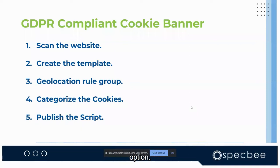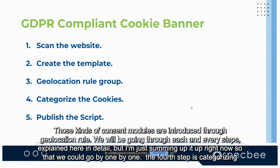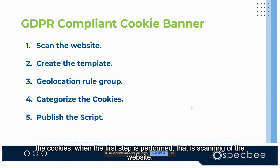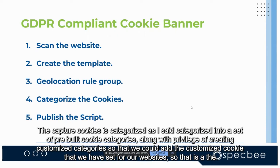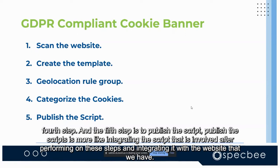The third step introduces opt-in or opt-out options through geolocation rules. The fourth step is categorizing the cookies — the captured cookies are categorized into pre-built cookie categories along with the privilege of creating customized categories for cookies specific to our website. The fifth step is to publish the scripts — integrating the script that is generated after performing all these steps into the website.